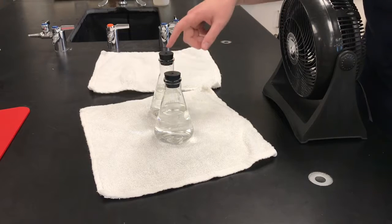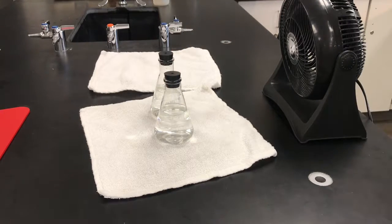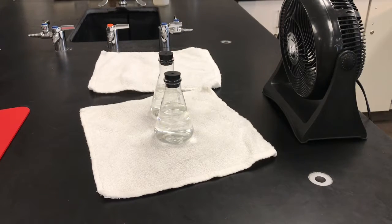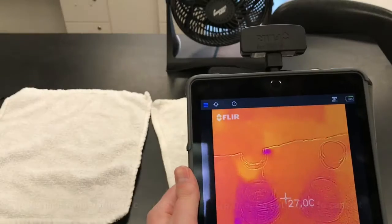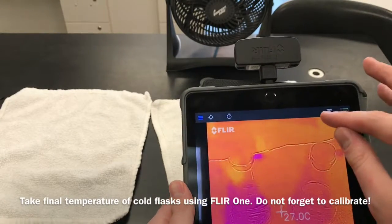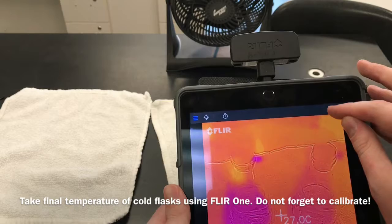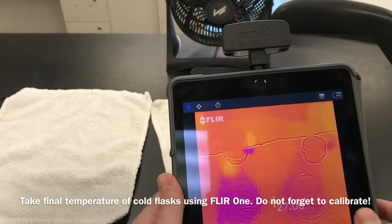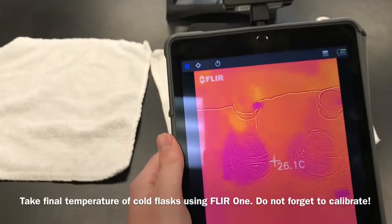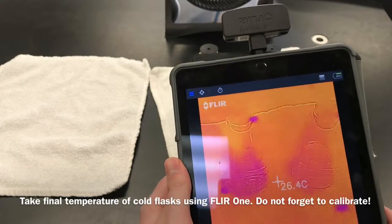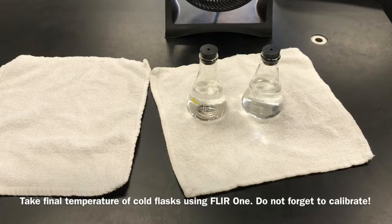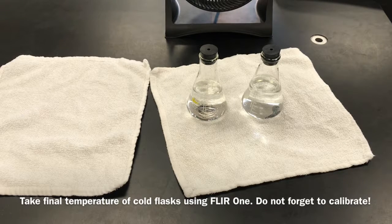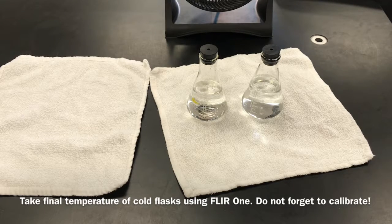So I remember now this was the one under the fan and this was the one that was away from the fan. And all I'm gonna do now is find both my flasks, I'm gonna calibrate, and then I'll take a final picture. So for part one all you need is two pictures: you need your initial picture and then the final picture after the flask was running under the fan for ten minutes.